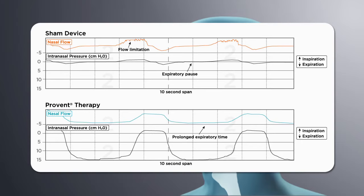The bottom panel shows the same patient with ProVent therapy. The inspiratory flow limitation has been improved. Expiratory time has been prolonged and the end-expiratory pause has been eliminated.